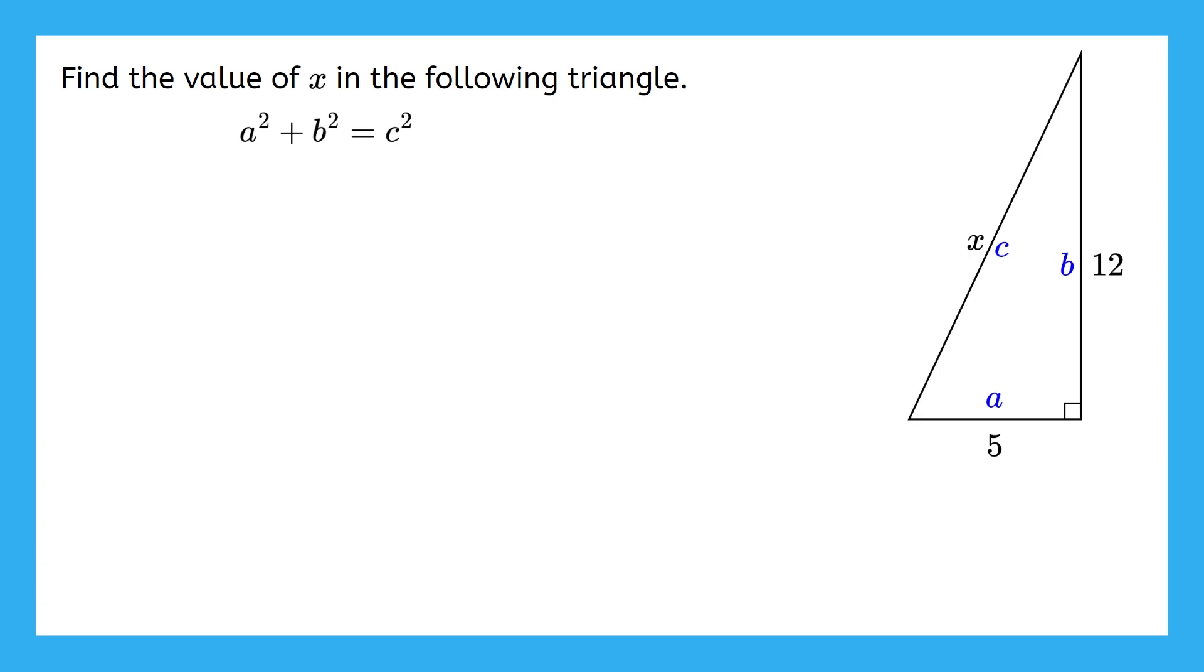Then, go ahead and solve for x, or c, if you haven't already. Okay, we'll substitute our values in for a, b, and c, and then we'll calculate the values of these squares. Next, we can add 25 and 144 to make 169.